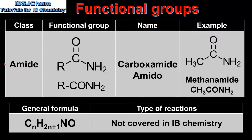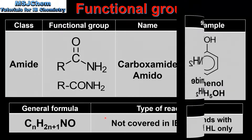Next we have amides. The class name is amide and the functional group name is either carboxamide or amido. A carboxamide functional group is a carbon atom with a double bond to an oxygen atom which has a single bond to a nitrogen atom. The nitrogen can be bonded to two hydrogens or other alkyl groups. This depends on whether it is a primary, secondary or tertiary amide. Here we have an example which is methanolamide which is a primary amide. The general formula is CnH2n+1NO, and the reactions of amides are not covered in IB chemistry.